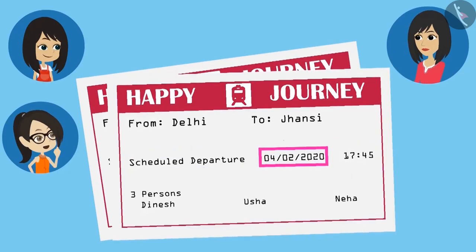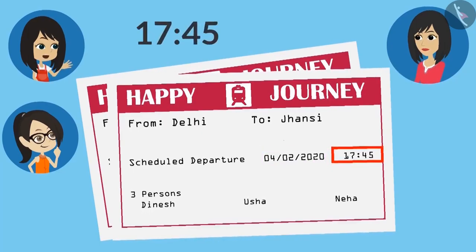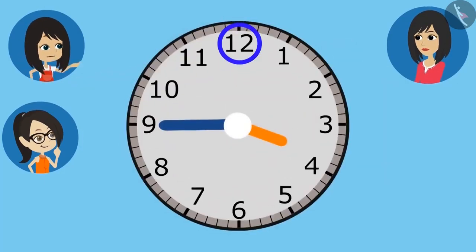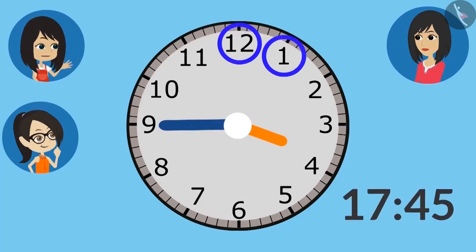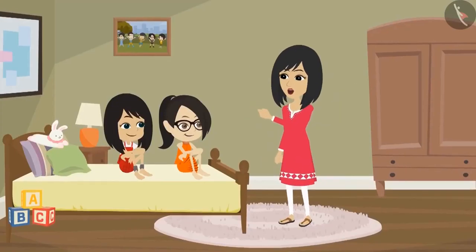Here we have understood the date, but where is the time written? Look here, Vandana — time is written right in front of the date. But it is written as 45 minutes past 17. But the time at most is 12. We write 1 after 12, so what does 17 mean?